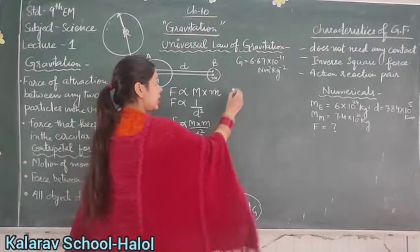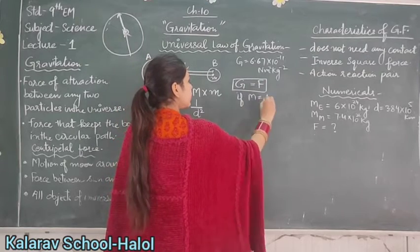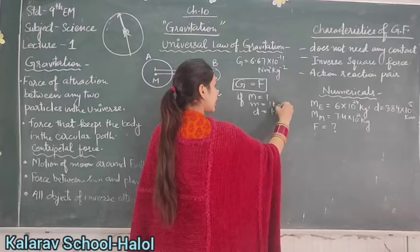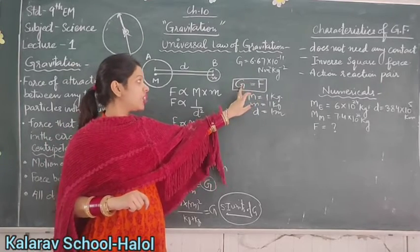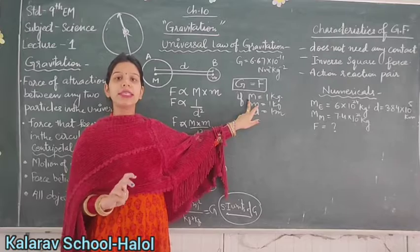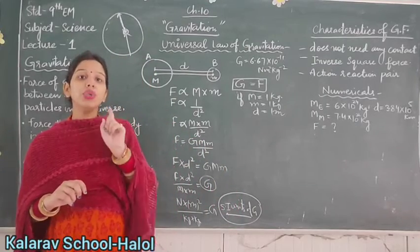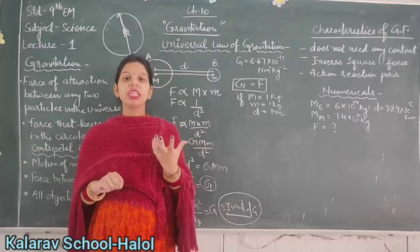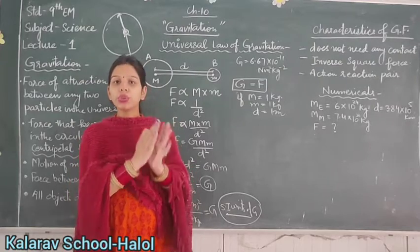We can define G as: G equals F when M = 1 kg, m = 1 kg, and D = 1 meter. So G is defined as the gravitational force of attraction when the masses of two objects are each 1 kg and they are 1 meter apart. When these three quantities are unity, then G equals F.